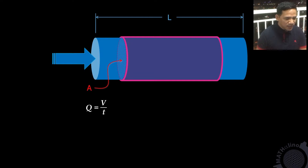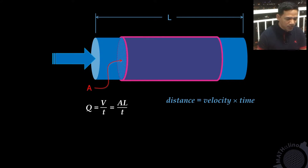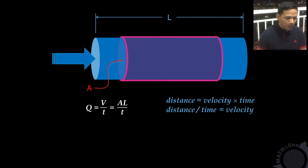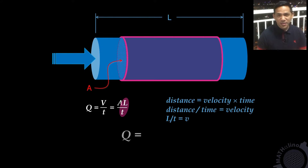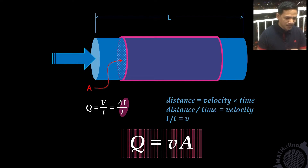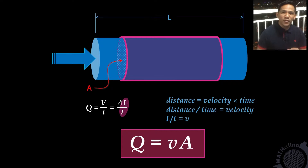From the figure, the volume of that liquid that passes through that area is equal to the cross-section of that volume, which is also equal to A, times the length, all over t. From the formula, distance equals velocity times time, so distance over time equals velocity. Therefore, l over t equals velocity, and we can write the formula: discharge equals velocity times area. This is our formula for discharge.